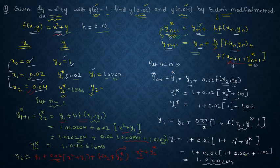If you add them up and multiply with 0.01 and add this with y₁ which is 1.0202, then you will get your y₂ as 1.0408.